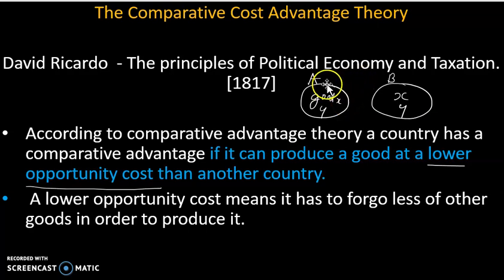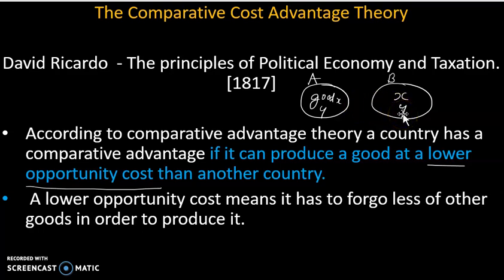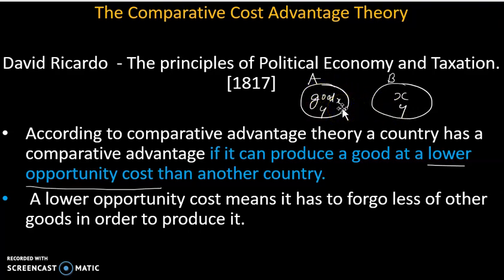Country A produces Good X and Good Y. Country B produces Good Y. If we are producing the same commodities, exchange is one thing — this is international trade. The decision will be the same, and the world level of total output increases.